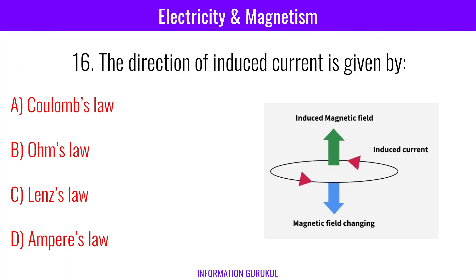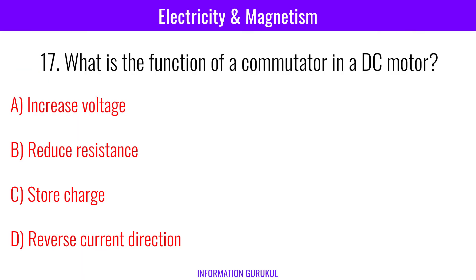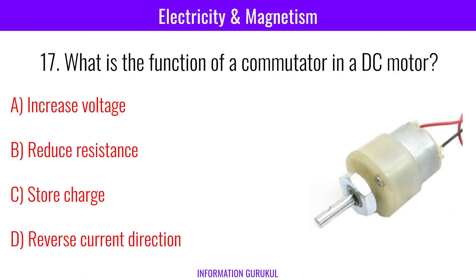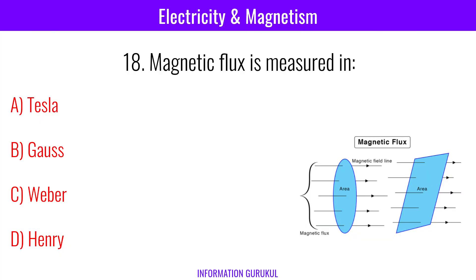The direction of induced current is given by Lenz's law. What is the function of a commutator in a DC motor? It reverses the current direction. Magnetic flux is measured in Weber.